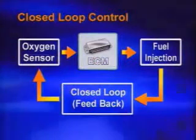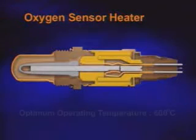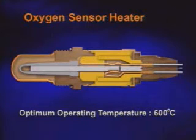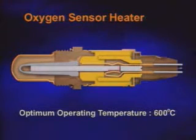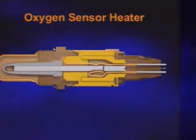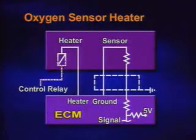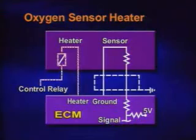The oxygen sensor has a heater element which heats the sensor to its optimum operating temperature of 600 degrees centigrade. The sensor is inoperative below 300 degrees centigrade.